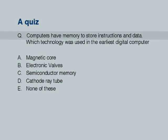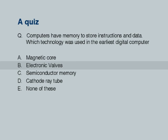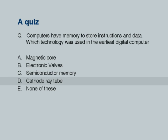Let me go through the quiz — it is very simple. We all know computers have memory to store instructions and data. This is a question about history, so do not be worried about giving wrong answers. Which technology was used in the earliest digital computer? The choices are: A — magnetic core, B — electronic valves, C — semiconductor memory, D — cathode ray tube, and E — none of these. We are setting the time to two minutes. Your time starts now.